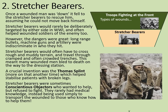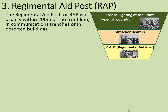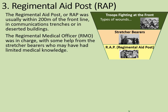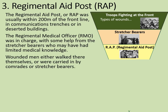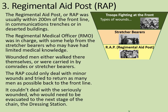The next stage of the evacuation route was the Regimental Aid Post, or RAP. It was usually within 200 metres of the front line, in communications trenches or deserted buildings. The Regimental Medical Officer was in charge, with some help from the stretcher bearers who may have had a limited medical knowledge, sometimes gained from experience. Wounded men either walked there themselves or were carried in by comrades or stretcher bearers. The RAP could only deal with minor wounds, trying to return as many men as possible to the front line. Those seriously wounded would need to be evacuated to the next stage of the chain, the dressing station.